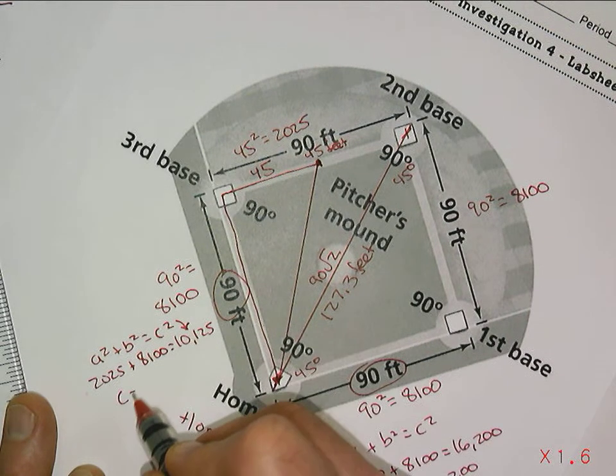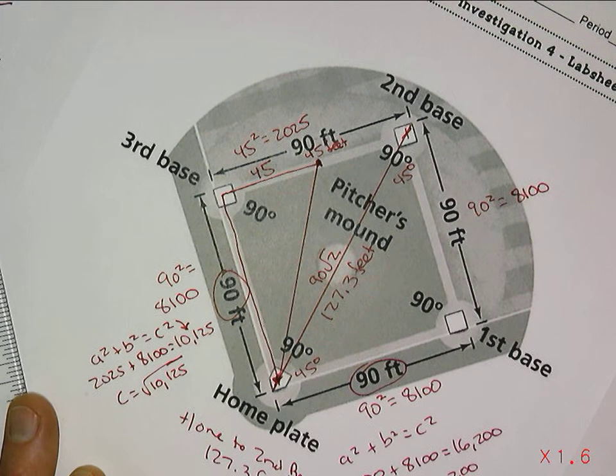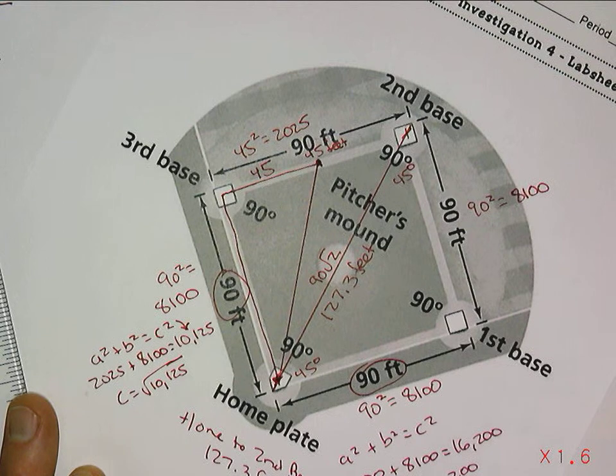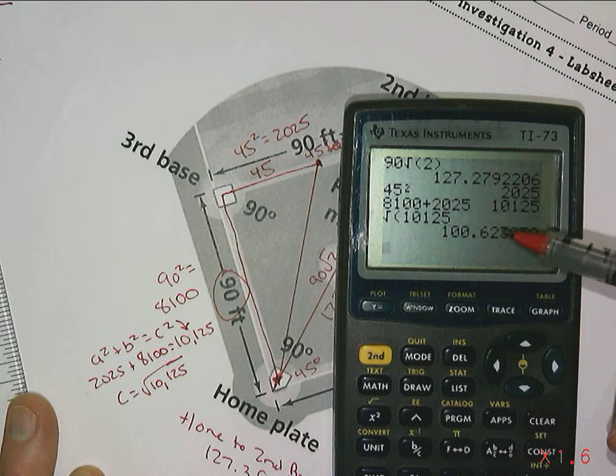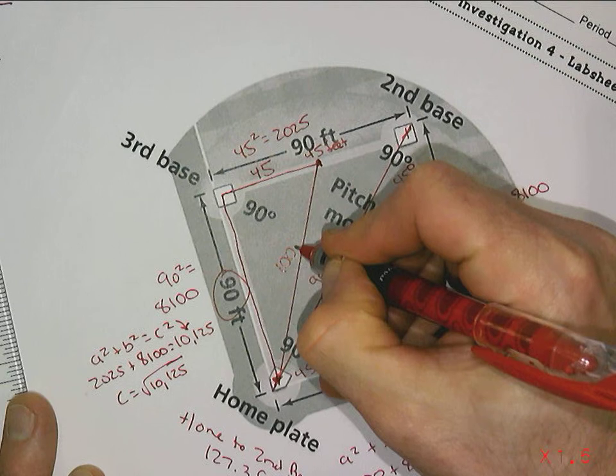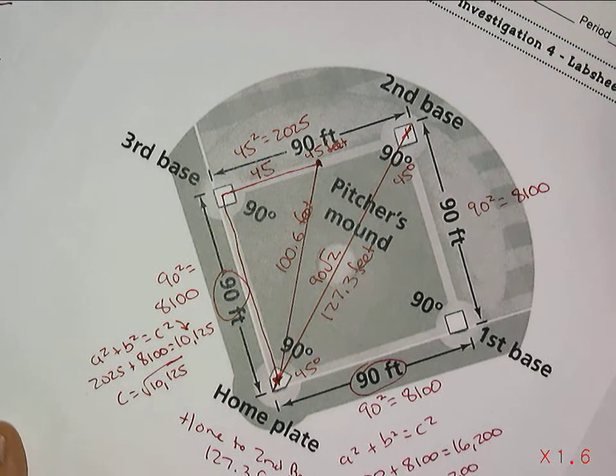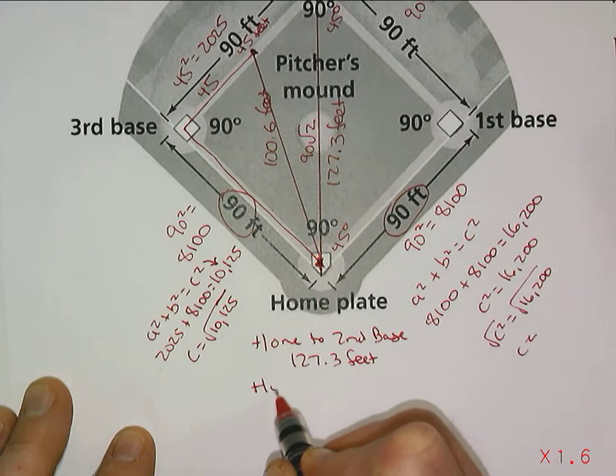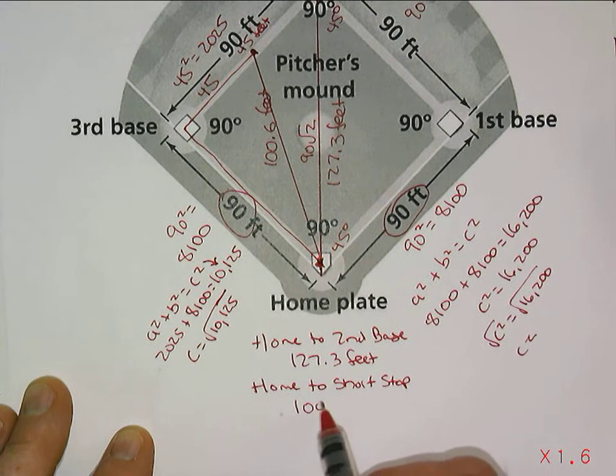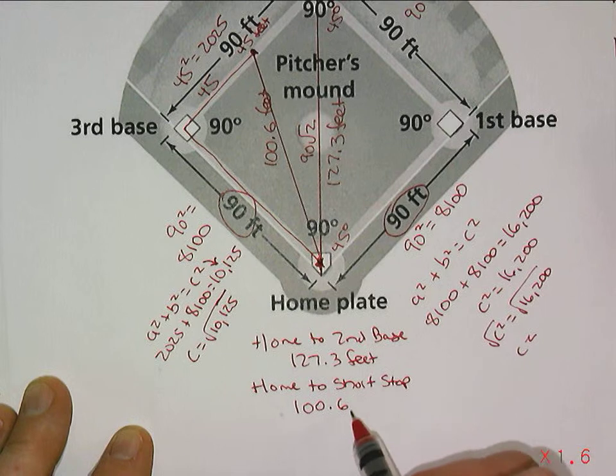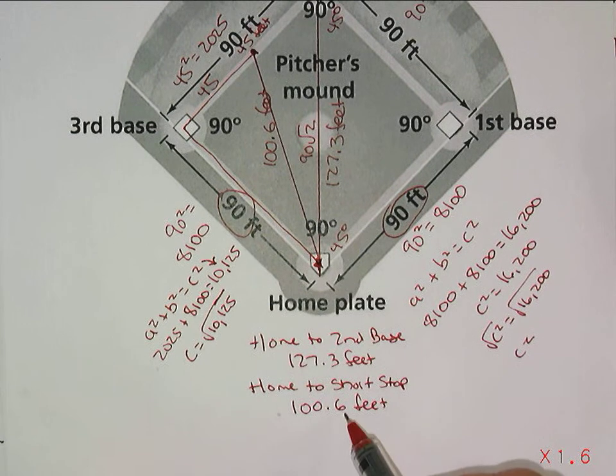I need c, so c is the square root of 10,125. Taking the square root of 10,125, in my calculation that's 100.6 approximately, so we have to round it off. So we have 100.6 feet from home plate to the shortstop if it was halfway between the two locations. So it's not quite as far of a throw. Home to shortstop, this distance is 100.6 feet, a little more than 100 and a half feet.